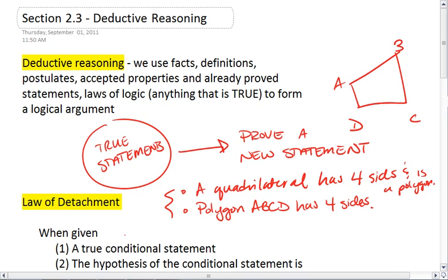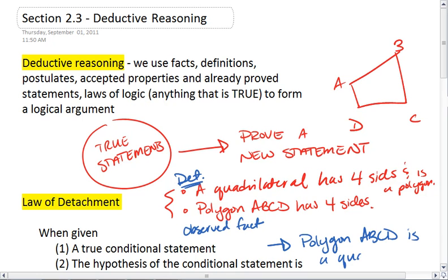From this, so from the first statement, which is a definition, and the second, which is an observed fact, we can conclude that polygon ABCD is a quadrilateral.